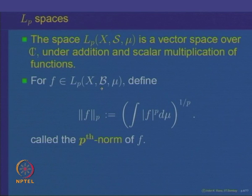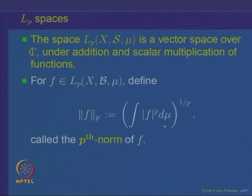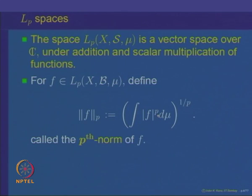Next, let us define for a function F ∈ L^P what is called the P-th norm of the function. Because F ∈ L^P, the integral of |F|^P d μ is a finite non-negative number, so we can take its P-th root. The P-th root of that integral, raised to the power 1/P, is called the P-th norm of the function F, denoted ‖F‖_P. The subscript P indicates we integrate the P-th power and then take the P-th root of the integral.